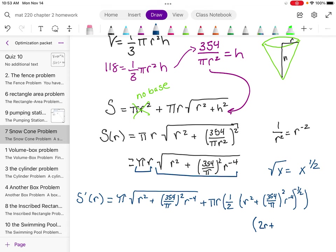R squared would be 2r plus this sort of funky 354 over pi squared. It's just a number, remember. But I have a power of r to the negative 4. So I would bring down the negative 4 times it by that constant. That's this crazy sort of irrational number. And that r is going to be to the negative 5th power because we minus 1.